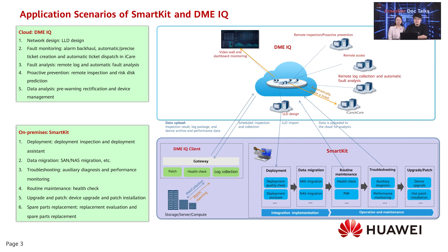We have two types of storage tools open to partners: DMAIQ on the cloud and on-premises SmartKit. DMAIQ helps with remote operations such as network design, remote O&M, and installed base operations. In contrast, SmartKit focuses on operations requiring client-device connections, for example, site deployment delivery, routing maintenance, upgrade or patch installation, capacity expansion, and so on. In certain scenarios, SmartKit and DMAIQ can collaborate with each other to boost storage delivery and O&M efficiency.